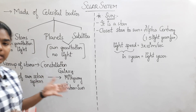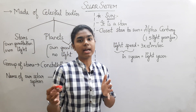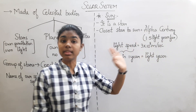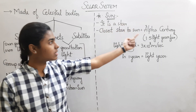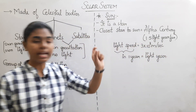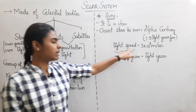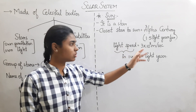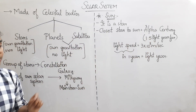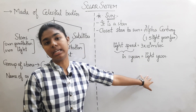Let's talk about the Sun. The closest star to the Sun is Alpha Centauri. The distance to Alpha Centauri is 1.5 light years. A light year means the distance light travels in one year, which is approximately 3×10^8 meters per second.